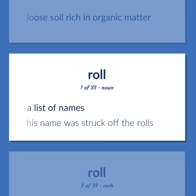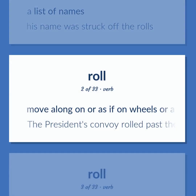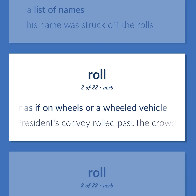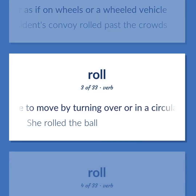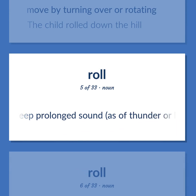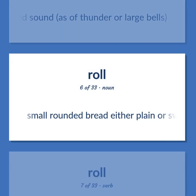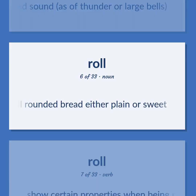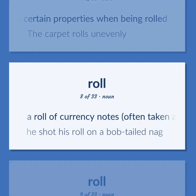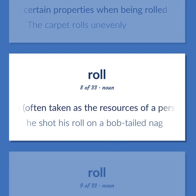Roll: A list of names — his name was struck off the rolls. Move along on or as if on wheels or a wheeled vehicle — the president's convoy rolled past the crowds. Cause to move by turning over or in a circular manner as if on an axis — she rolled the ball. Move by turning over or rotating — the child rolled down the hill. A deep prolonged sound, as of thunder or large bells. Small rounded bread, either plain or sweet. Show certain properties when being rolled — the carpet rolls unevenly. A roll of currency notes, often taken as the resources of a person or business — he shot his roll on a bob-tailed nag.